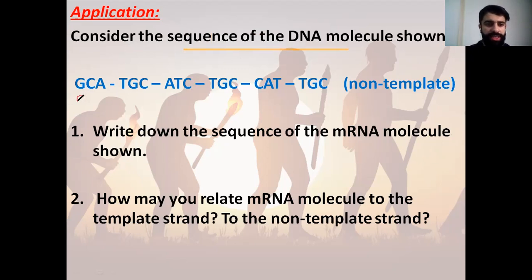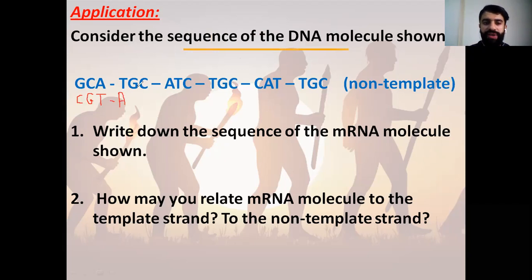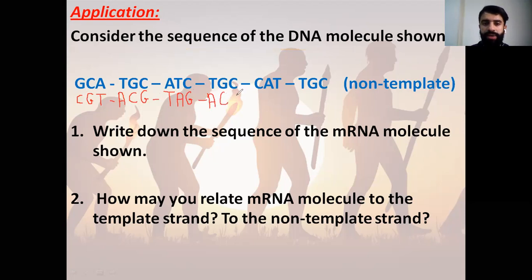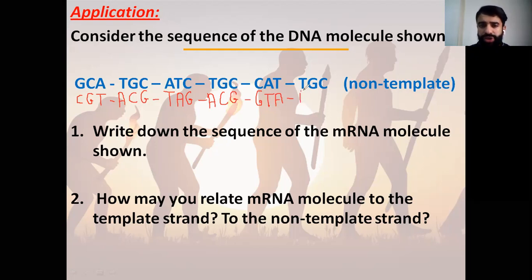Let's write the template here by finding the complementary of each base. The complementary of G is C, C is G, A is T. Moving to the second codon: T is A, G is C, C is G. Continuing: A is T, T is A, C is G. Then T is A, G is C, C is G. Next: C is G, A is T, T is A. Be careful — you have to write them under each other in order not to have mistakes. T is A, C is G, G is C, and C is G.